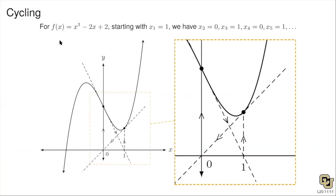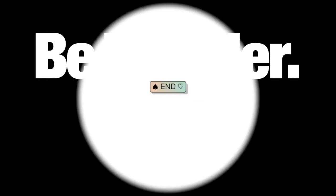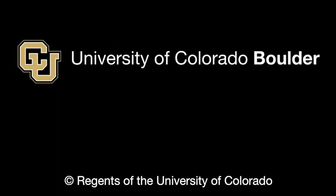Based on the graph, it would be smarter to pick a starting point on the left side of 0 rather than starting at 1 — that ended up in the cycling phenomenon. That's Newton's method.